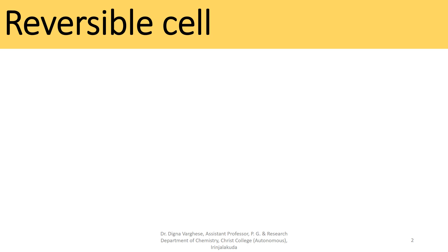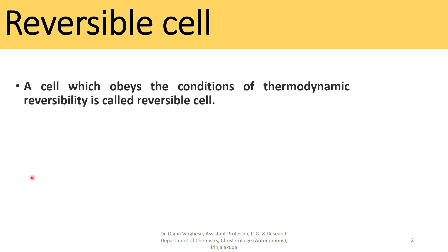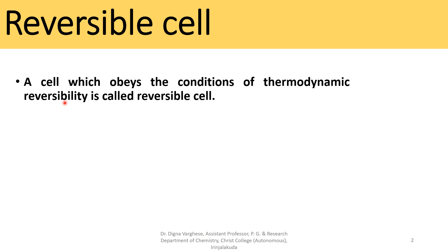Reversible Cell. A cell which obeys the conditions of thermodynamic reversibility is called a reversible cell. Throughout the entire reversible process, the system is in thermodynamic equilibrium with its surroundings. Having been reversed, it leaves no change in either the system or the surroundings. Since it would take an infinite amount of time for the reversible process to finish, perfectly reversible processes are impossible.